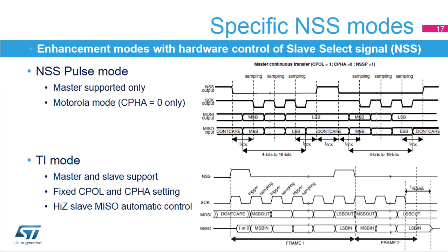There are a few enhanced modes when the slave select signal is under specific hardware control. The slave select signal can operate in a pulse mode where the master generates pulses on the NSS output signal between data frames for a duration of one SPI clock period when there is a continuous transfer of data. The data is then interleaved by two SPI clock periods. The clock phase is fixed in this mode. Another enhanced mode is the TI mode where the data flow is synchronized by the NSS pulses provided by the master on the last bit of data. The clock polarity and phase configuration is fixed, and the slave data output is automatically switched into high impedance when the bus traffic stops and on a specific configurable timeout.